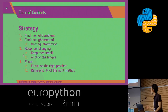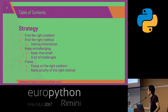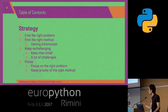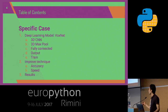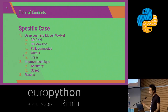The first part consists of strategy: find the right problem, find the right method, keep re-challenging, and focus. The second part is deep learning applied to 3D objects, where I will talk about BoxNet, how to improve BoxNet, and the results.